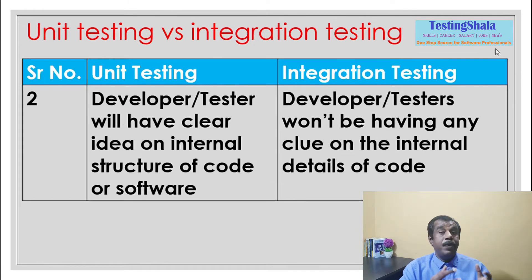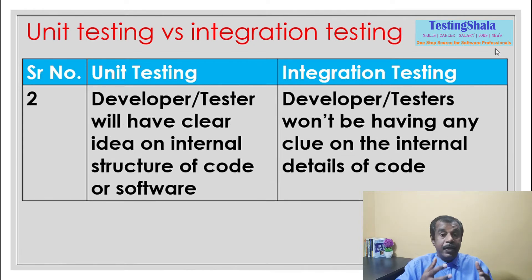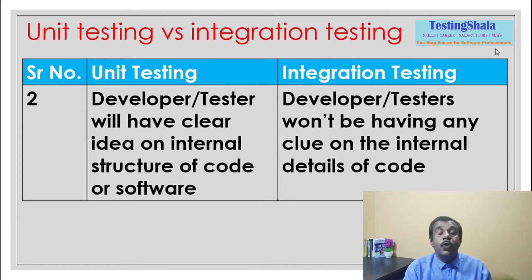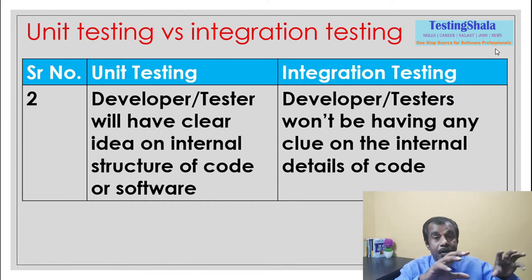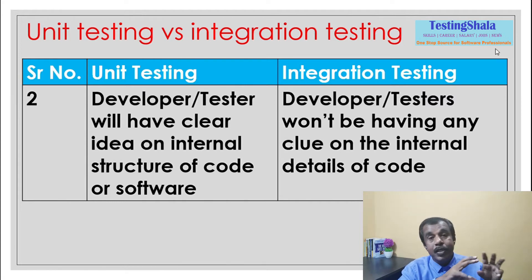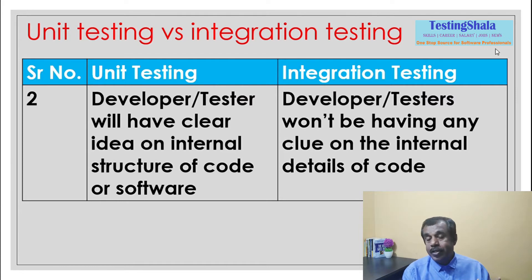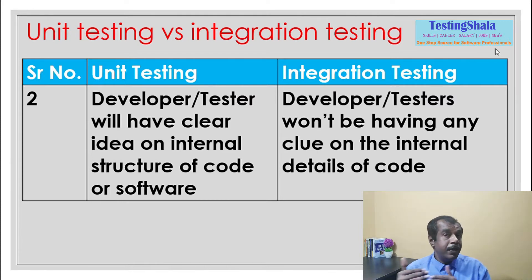The second important difference is that in unit testing, the developers or testers have complete knowledge of the code that has been written. They are able to see the code, and whenever they want to write unit test cases they first look at the lines of code, understand the logic, and then write the unit test cases. That is how unit testing works.